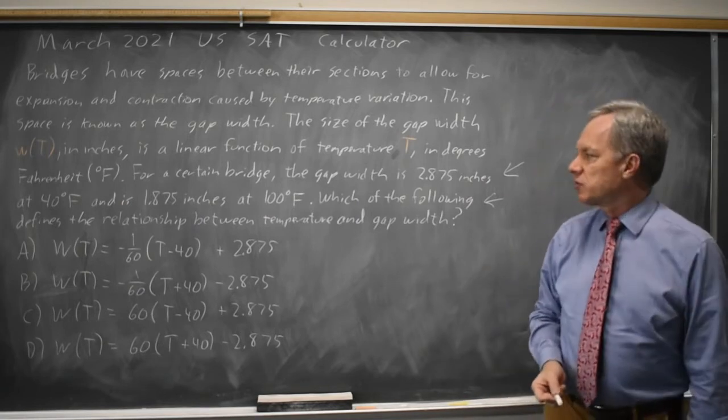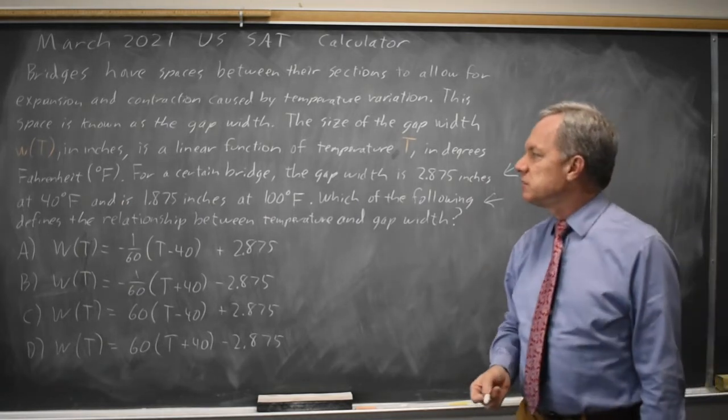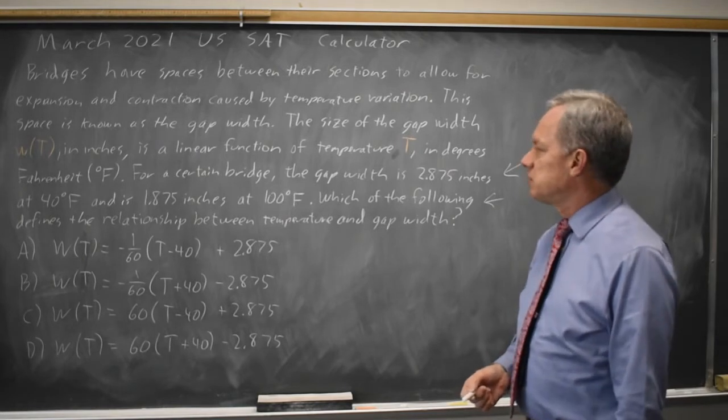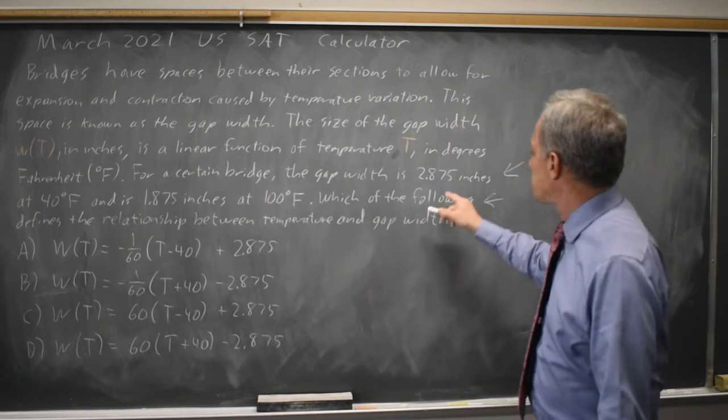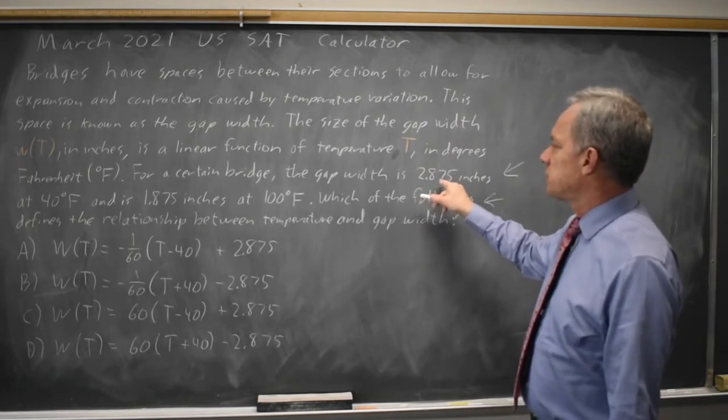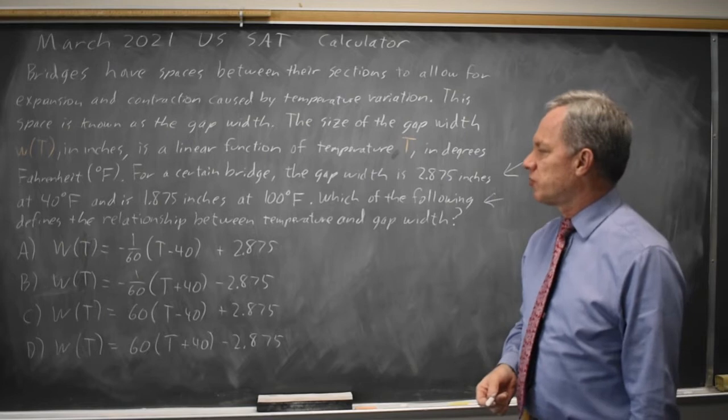And they ask for the equation for gap width. What I'm going to do is substitute in those values, and since I'm seeing a 2.875 each time, I'm going to substitute in the 2.875 inches for W when T is 40.